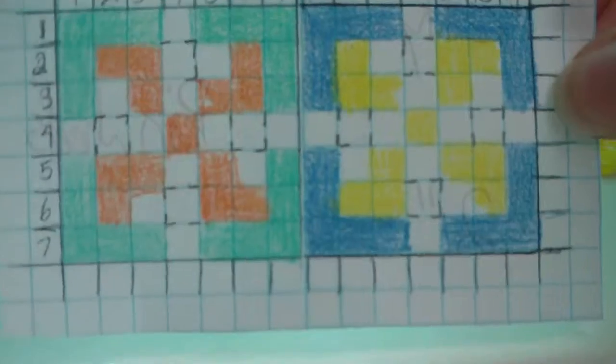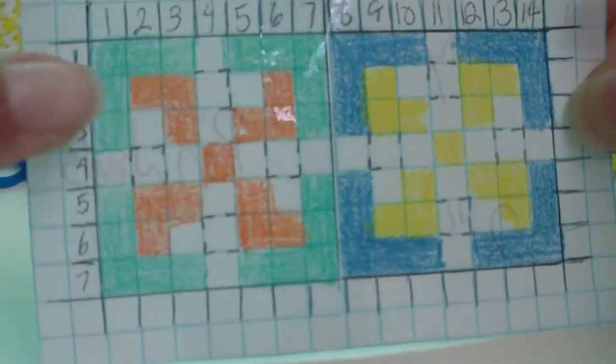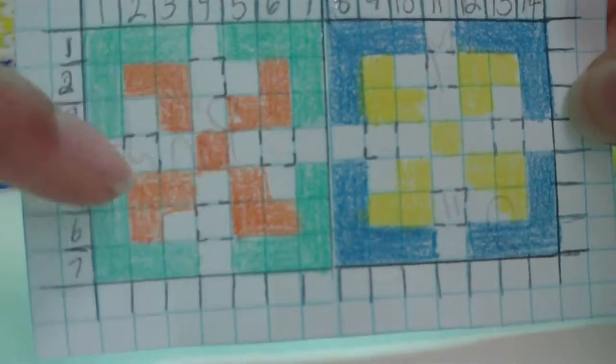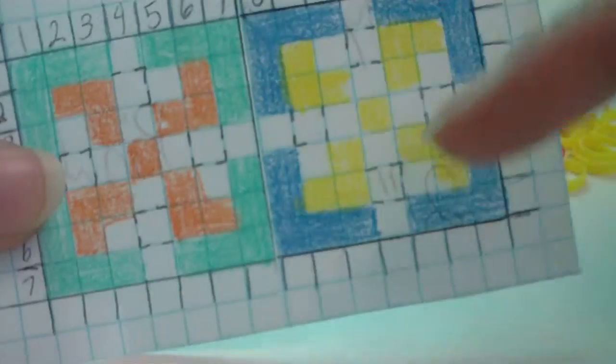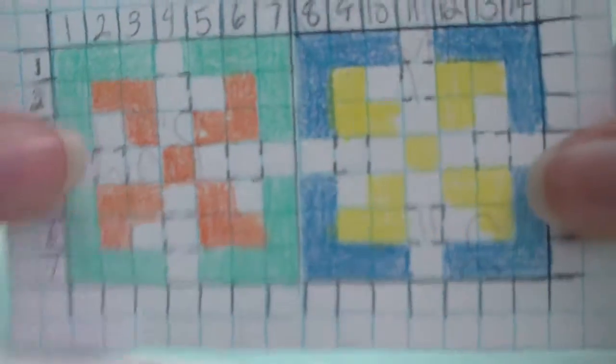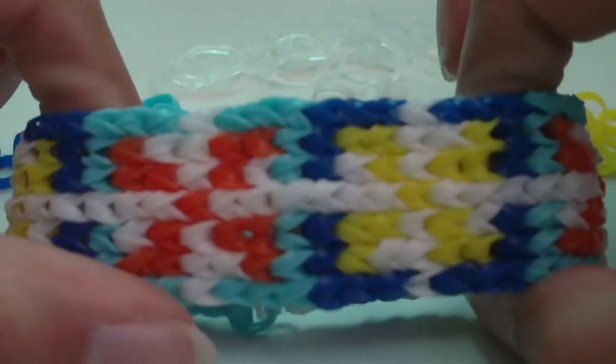The pinwheels are slightly different. This one is kind of pointing clockwise, and then this other one's pointing counterclockwise. Since the design is pretty long, I would recommend using alpha bands or capped regular bands so you can fit more of them on a bracelet.